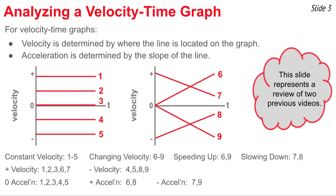We're going to begin with a review of the two most recent videos in this tutorial series on kinematics. We've learned that velocity on a velocity-time graph is determined by where the line is located on the graph — whether it's above or below the axis and how far from the time axis. We've also learned that acceleration is determined by the slope of the line. We're looking at nine different lines on velocity-time graphs. Lines 1 through 5 are representative of an object with constant velocity — no acceleration. Objects 6 through 9 are represented by diagonal lines and are accelerating objects — they're changing their velocity.